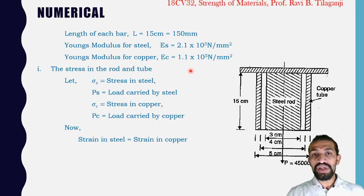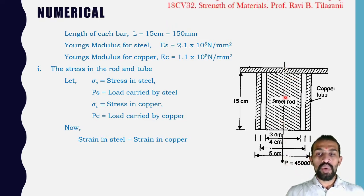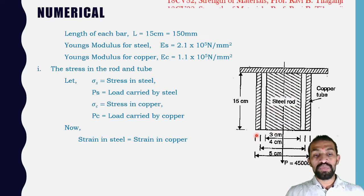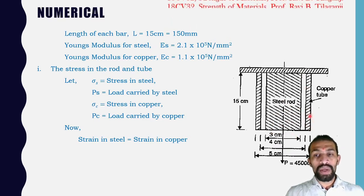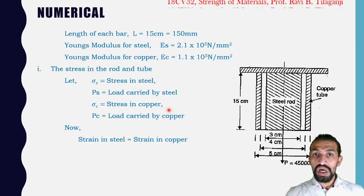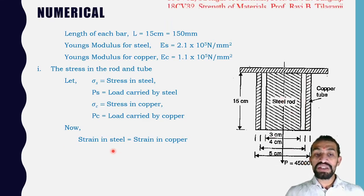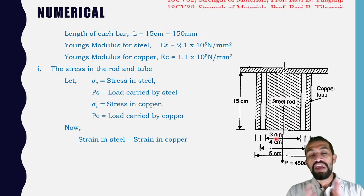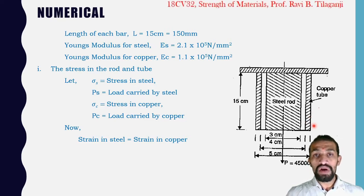Strain in steel must equal strain in copper, because when pulling with 45,000 Newton, both deform together. Whatever extension occurs in the steel rod — say 5 mm — the same 5 mm extension must also occur in the copper tube.